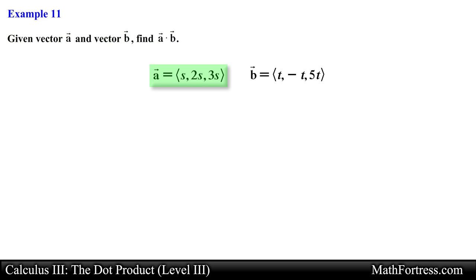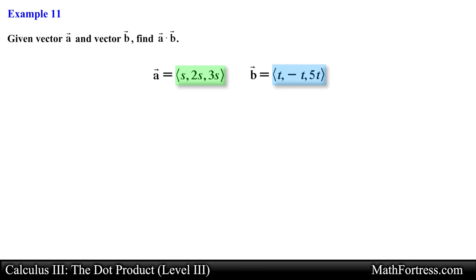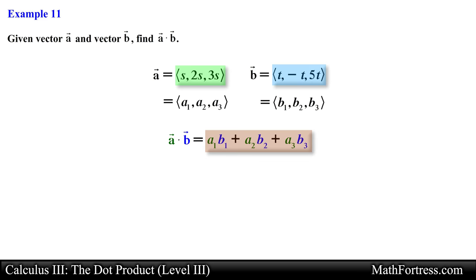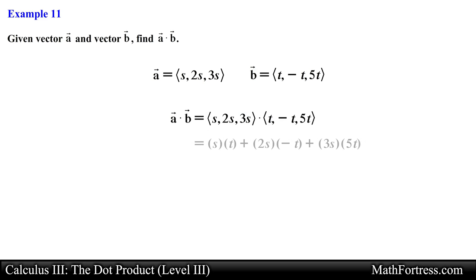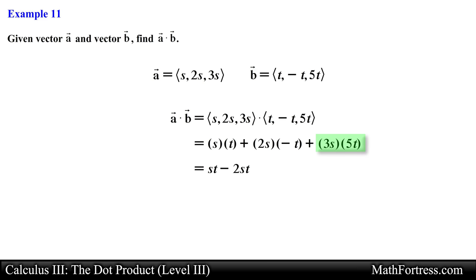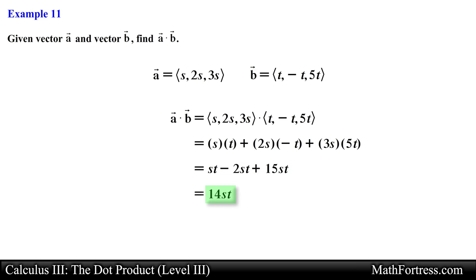Here we have vector a with components s, 2s, and 3s, and vector b with components t, negative t, and 5t. The components are variable expressions rather than real numbers, so the dot product will simplify to a variable expression. Using the component definition, we multiply the x, y, and z components and add them. The first product is st, the second is negative 2st, and the third is 15st. Collecting like terms gives a final answer of 14st.